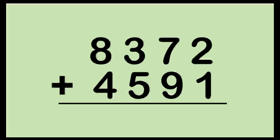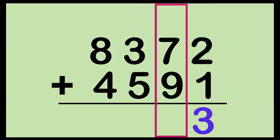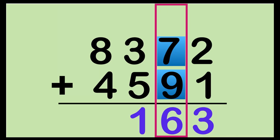Let's go now to our next example: 8,372 plus 4,591. Let's start at the one's place. 2 plus 1 — put 2 on your mind: 2, 3. We have 3. Let's proceed to the ten's place. 7 plus 9 — put 9 on your mind, big number first: 9, 10, 11, 12, 13, 14, 15, 16. We have 16 here. So children, you need to regroup one to the hundred's place.